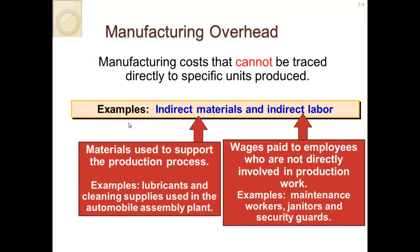Manufacturing overhead includes indirect materials and indirect labor. Lubricants and cleaning supplies used on the automotive assembly plant aren't directly traceable to a specific car. Also included are wages paid to employees who are not directly involved in production work — examples are maintenance workers, janitors, and security guards.